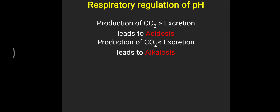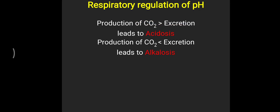Respiratory regulation targets maintaining pH within the range of 7.35 to 7.45. In metabolic acidosis, excessive carbon dioxide is generated, leading to excessive carbonic acid. When more carbonic acid is produced than the body can excrete, acidosis results. A problem in the respiratory system itself can lead to respiratory acidosis. Conversely, if less carbon dioxide is produced but more is expelled, carbon dioxide levels decrease, less carbonic acid is present in the body, and that can lead to alkalosis.